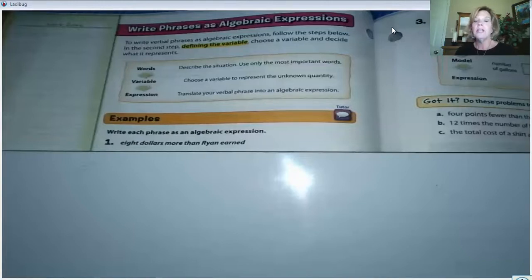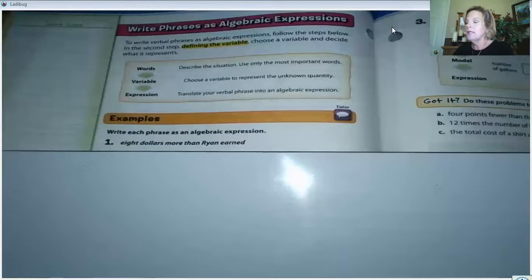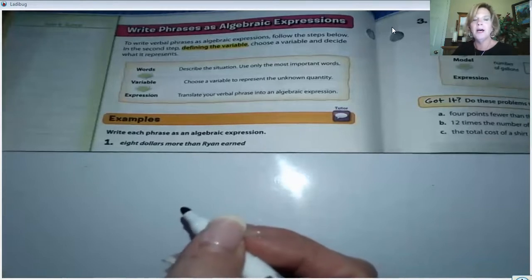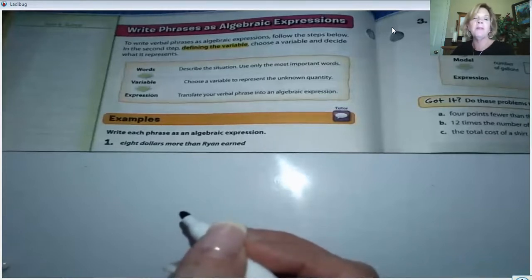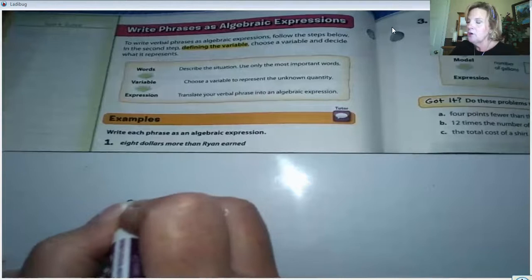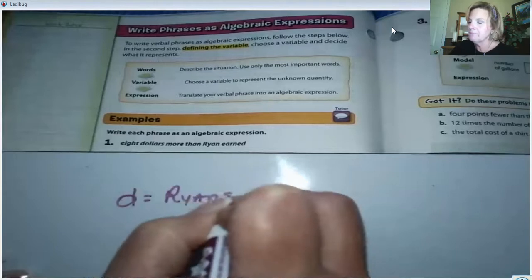Look at example number one in your textbook on page 540. Example number one says '$8 more than Ryan earned.' We know that it's $8 more, but do we know how much Ryan earned? No. So let's choose a variable. The book chooses D, probably to represent dollars. So let's use that — D represents Ryan's earnings.